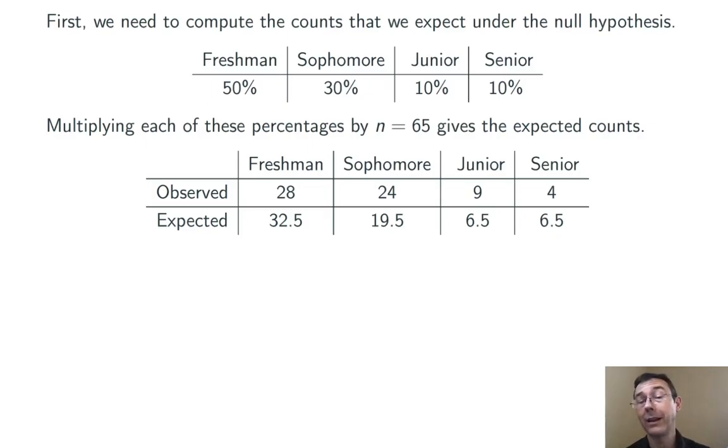We take the sample size of n equals 65 and multiply it by these different percentages. Our expected cell counts are 32.5, 19.5, 6.5, and 6.5.